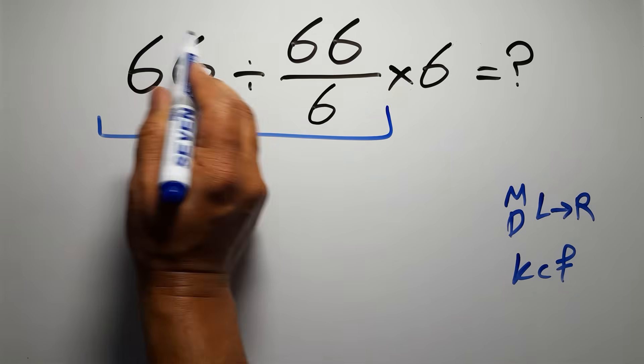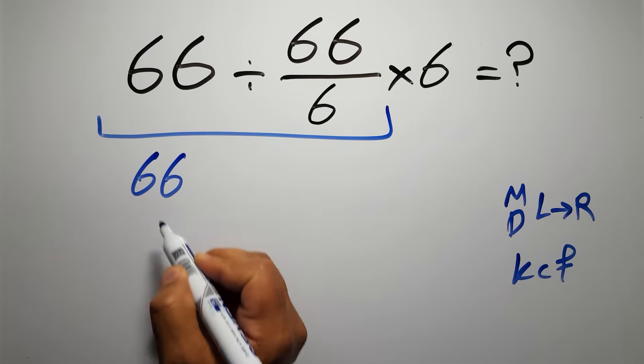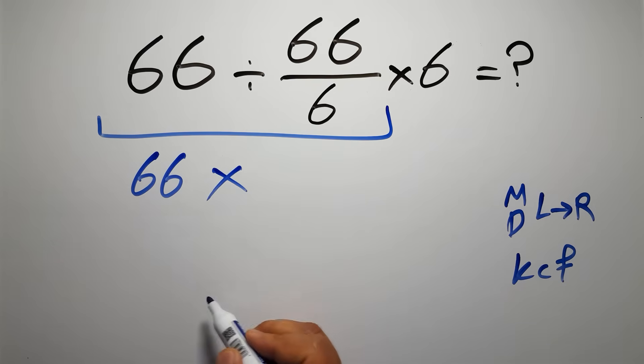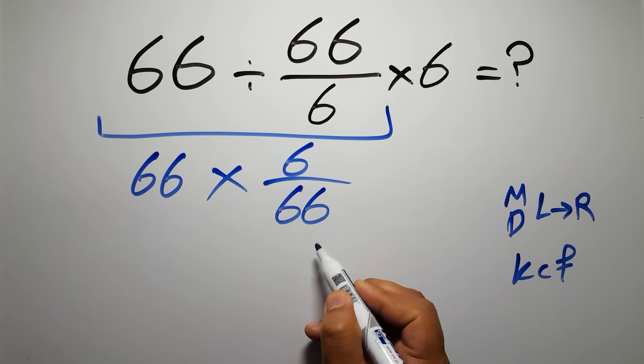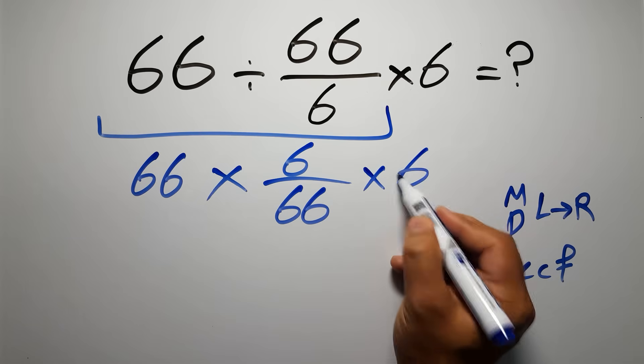We can write: keep the first fraction, change division to multiplication, and flip the second fraction. Then times 6.